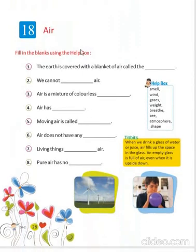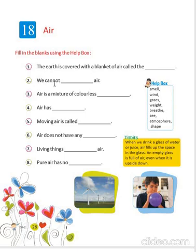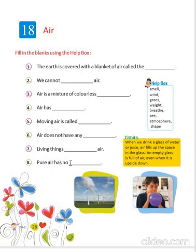Now come to Chapter 18, Air. We have to fill the blanks using the help box. The earth is covered with a blanket of air — we call that the atmosphere. We cannot see air. Air is a mixture of colorless gases. Air has weight. Moving air is called wind. Air does not have any shade. Living things breathe air. Pure air has no smell.